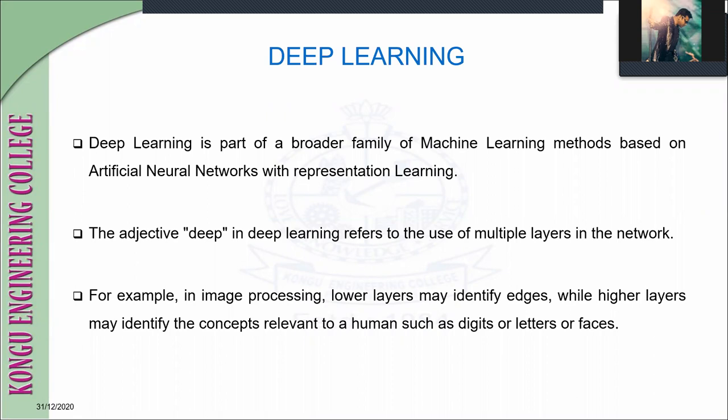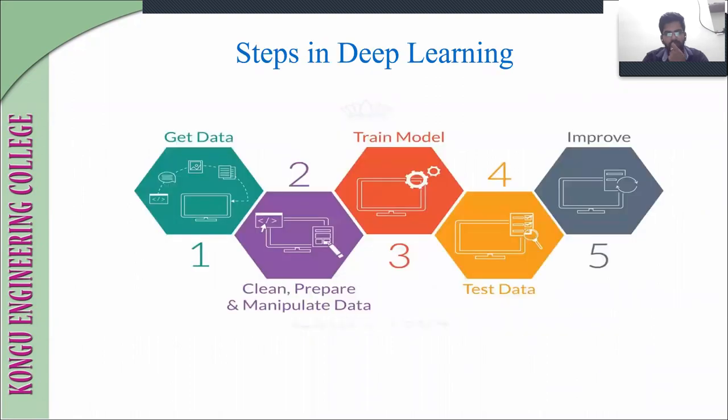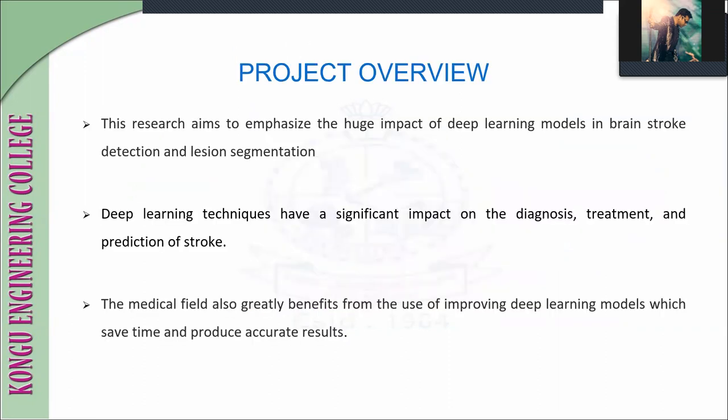These are all the steps in deep learning: first we get the data, then we manipulate the data. As a third step we train the model, then we test the data, and finally we improve the gained accuracy.